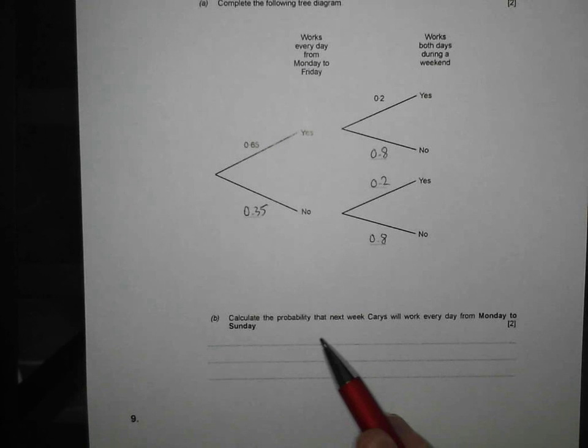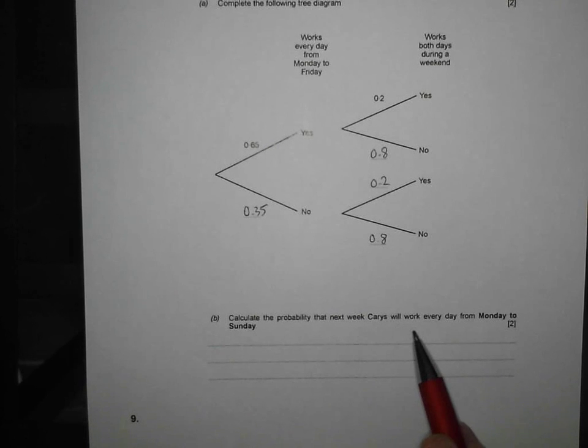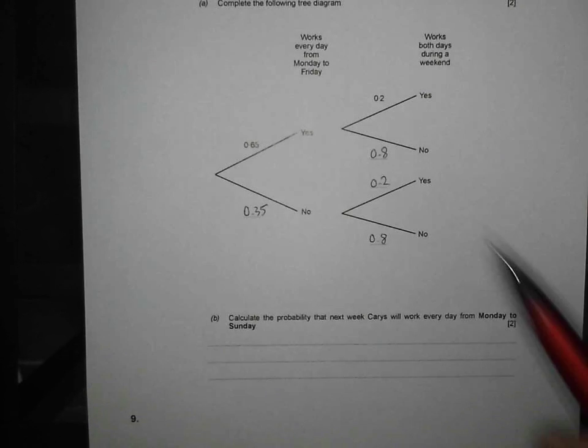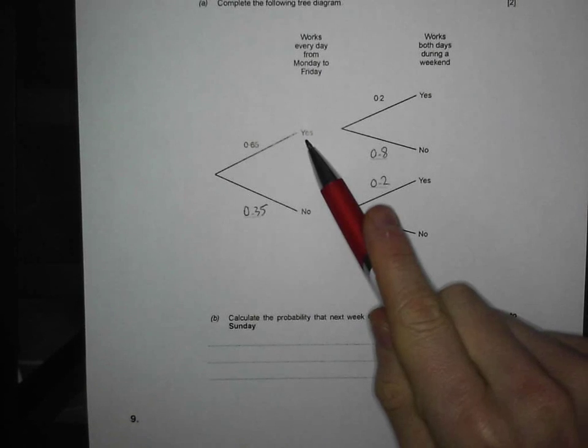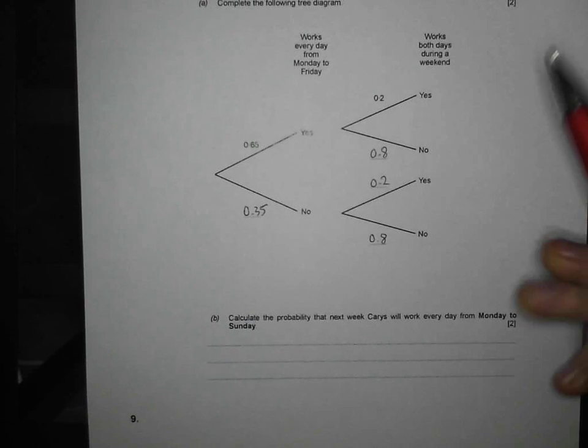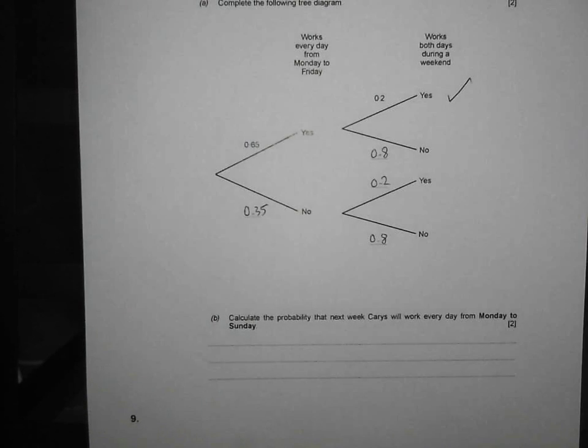Calculate the probability that next week, Keris will work every day from Monday to Sunday. So, she's got to work Monday to Friday, and then she's going to put a few hours in and work the weekend as well. So, I think it's those two branches there.